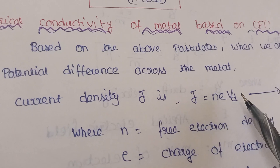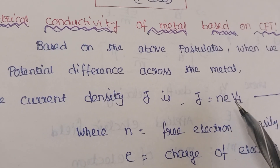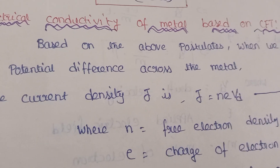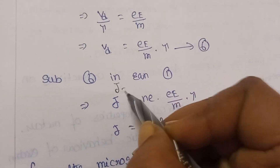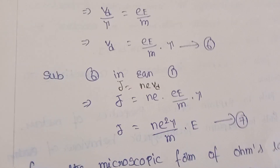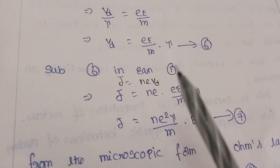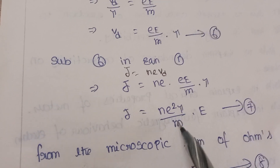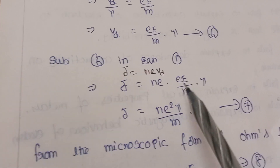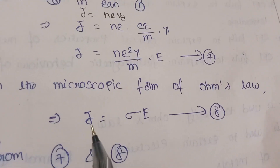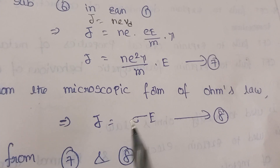Now, substituting the value of v_d = (eE/m) × tau into j = nev_d, we get j = ne × (eE/m) × tau = (ne²τ/m) × E. Separating capital E, and using the microscopic form of Ohm's law, j = σE, we can compare the two expressions.